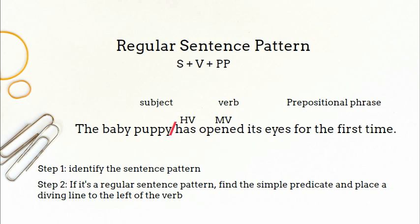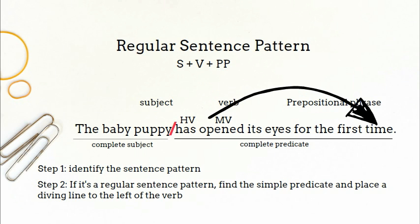With this sentence pattern of S plus V plus PP, everything to the left of the verb or verb phrase is the complete subject. So everything to the right of the dividing line is the complete predicate. Make sure that you include all words beginning from the verb all the way to the end of the sentence.